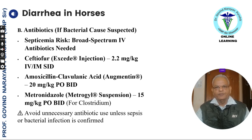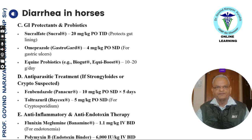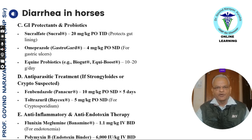Antibiotics for foals include ceftiofur 2.2 mg per kg intramuscular or IV, amoxicillin 20 mg per kg, and metronidazole 15 mg per kg. Avoid unnecessary antibiotic use unless sepsis or bacterial infection is confirmed. For GI protection and probiotics, use sucralfate 20 mg per kg, omeprazole 4 mg per kg, and equine probiotics 10 to 20 grams per day.